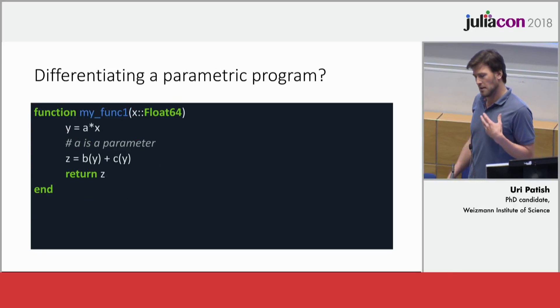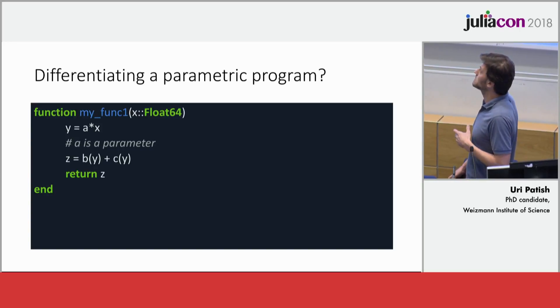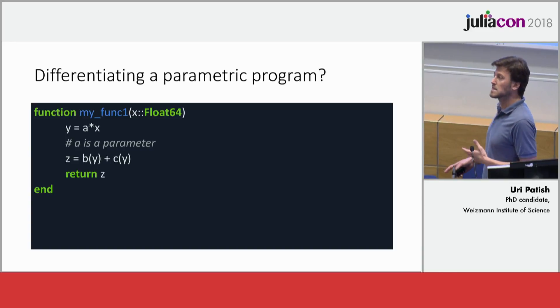To do that, we're going to need to be able to define and differentiate parametric programs. As a toy example, let's think about this following function. Here I'm going to take x as an input, multiply it by some parameter a, which I might want to learn its value using gradient-based learning. Then I'm going to store the output of this multiplication in a new variable called y, perform two transformations, sum them up, and return that as my final value.